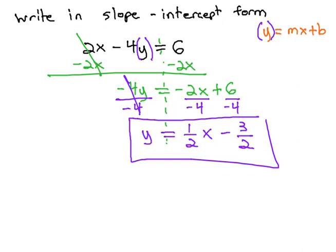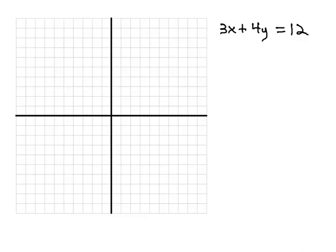Let's take a look at another example where we're actually asked to graph 3x plus 4y equals 12. As you can see, we are missing the y-intercept and the slope because it's not in the correct form. So what we will need to do is solve this equation for the y.